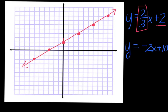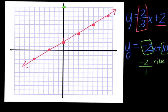The y-intercept of the second equation is ten, so I have to go all the way up to ten on the y-axis. My slope is negative two — if there's not a number underneath it, remember you can put a one. So my slope is down two over one. From this point way up here, I'm going to go down two over one repeatedly. It looks like I crossed, but I should always do at least one more point. Down two over one a few more times.